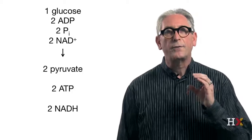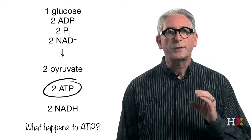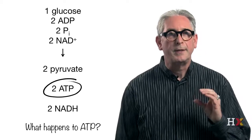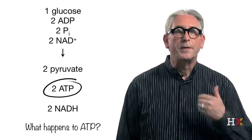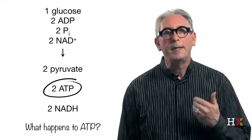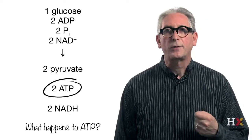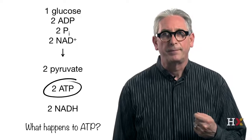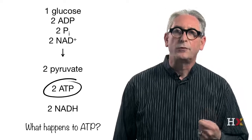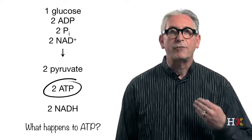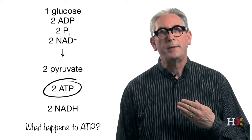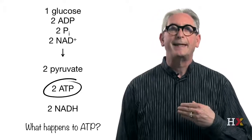Let's focus first on what happened to ATP. ATP is the main source of energy that cells use to do work, because the hydrolysis of ATP is a source of energy that drives forward unfavorable reactions.